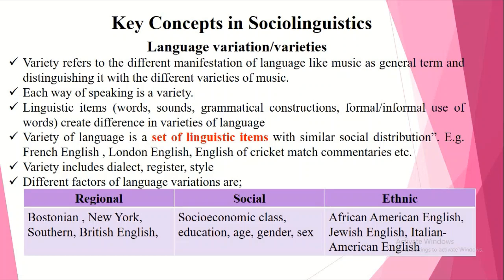The next key concept in sociolinguistics is language variation or varieties. Variety refers to the different manifestations of language — like music as a general term distinguished from its different varieties. Each way of speaking is a variety. Linguistic items like words, sounds, grammatical constructions, and formal and informal use of language create differences in varieties of language.